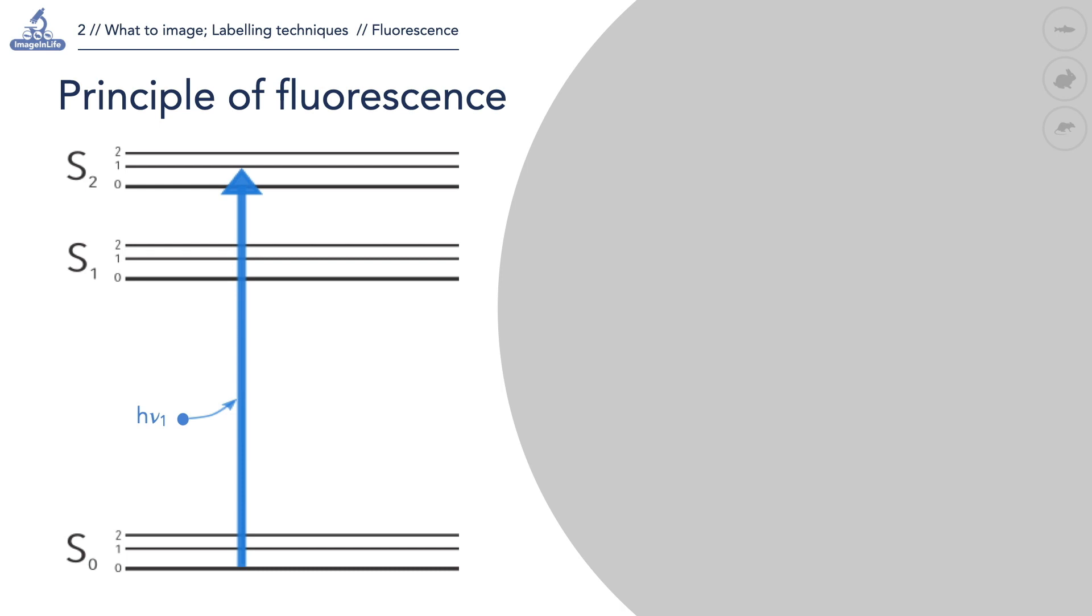Due to the instability of its higher energy state, the electron returns to the ground state by emitting a photon of lower energy and longer wavelength. This is due to the fact that the electron lost energy in the process. The Jablonski diagram illustrates the most important characteristics of fluorescence.